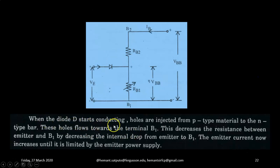Now when diode D starts conducting, when this diode is forward biased and it starts conducting, holes are injected from P type material to the N type bar. So holes will be injected here. These holes flow towards the terminal B1 because B2 is positive. So these holes will get repelled by this positive terminal. So they will get attracted to terminal B1.